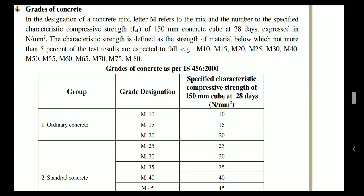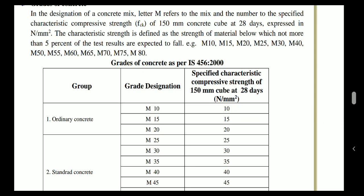The characteristic compressive strength (fck) is defined as the strength of material below which not more than five percent of the test results are expected to fall. This means if we make 100 cube samples, not more than five cubes are expected to have results below 20 N/mm². So we specify it as M20 grade of concrete. There are many grades of concrete ranging from M10 to M80 as shown in the table.